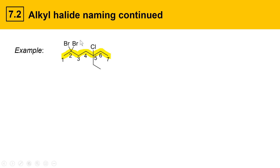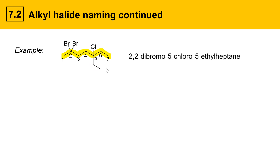This molecule has two bromines at the 2 position, a chlorine at the 5 position, and an ethyl group at the 5 position. Naming these substituents alphabetically and placing them in front of the root name gives 2,2-dibromo-5-chloro-5-ethyl-heptane. Importantly, the di- prefix does not affect alphabetization — B for bromo comes before C for chloro, which comes before E for ethyl. Whenever you use di-, tri-, or tetra- prefixes to indicate multiple groups, that prefix does not influence the alphabetization of that term.